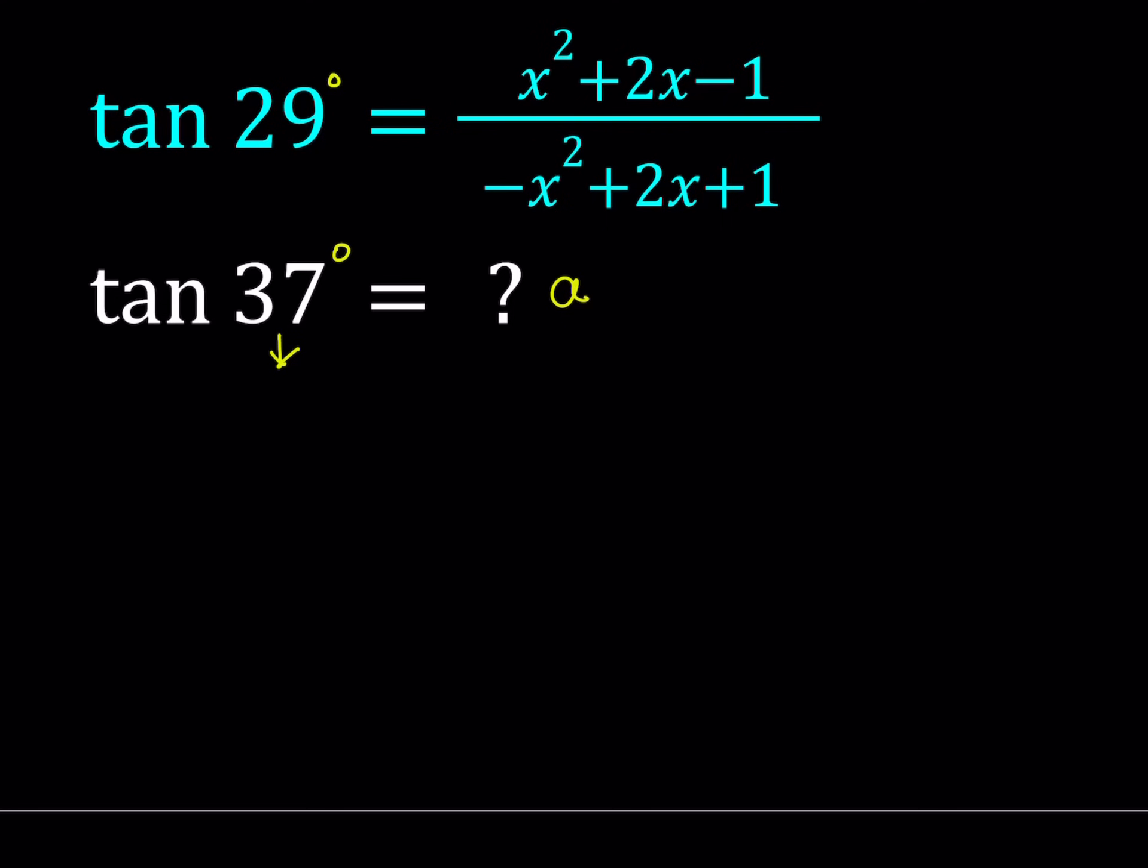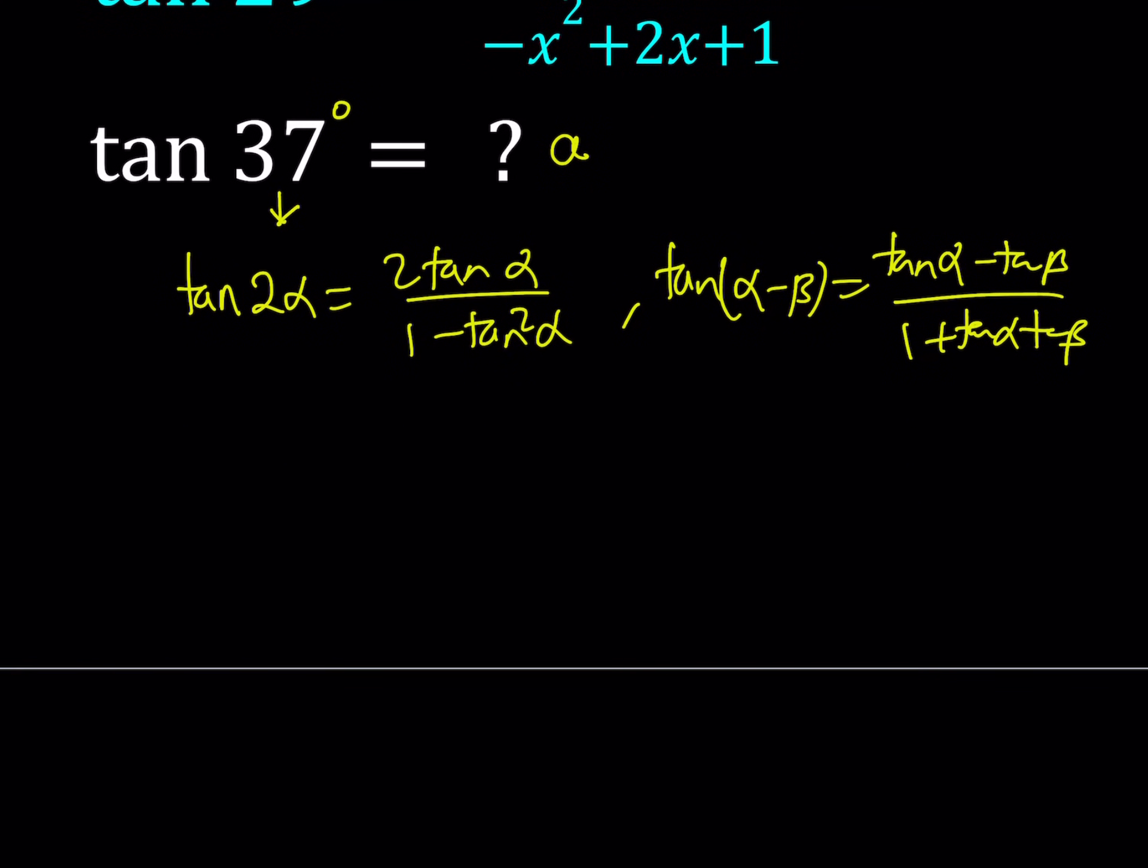Let's go ahead and use the double angle formula and the difference formula. One of the formulas we're going to use is tangent 2 alpha equals 2 tangent alpha divided by 1 minus tangent squared alpha. And the other formula is the difference formula for tangent, which is tangent alpha minus tangent beta divided by 1 plus tangent alpha times tangent beta. Those are the tools we're going to use.